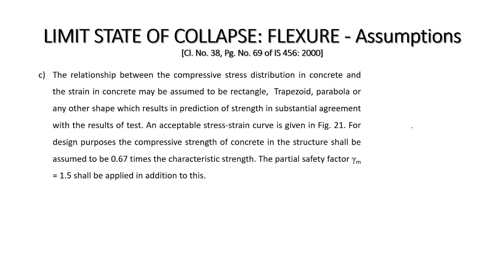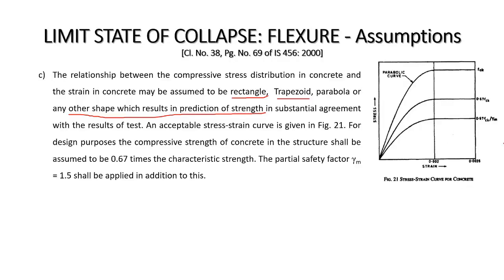Assumption number 3 states that the relationship between compressive stress distribution and strain in concrete may be assumed to be rectangular, trapezoidal, parabolic, or any other shape which results in prediction of strength in substantial agreement with test results. The stress-strain relation depends on what results are obtained after testing the material. IS 456 mentions one acceptable stress-strain curve as shown in figure number 21.